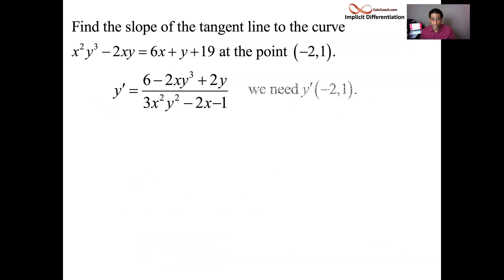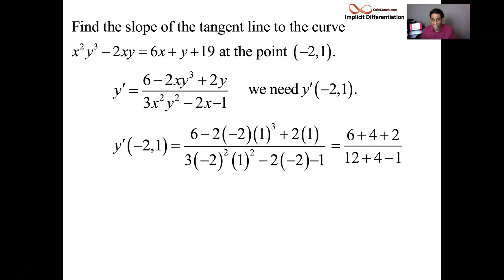So x is negative 2 and y is 1. Replace all those x's with negative 2's. Replace all those y's with 1's. It's a crazy order of operations question, but you could do it. The cubing and the exponent part, that's just straightforward there. So we have 6 plus 4 plus 2. And then we'll have 12 plus 4 minus 1. Very careful there with the sign. So numerator is 12, denominator is 15.